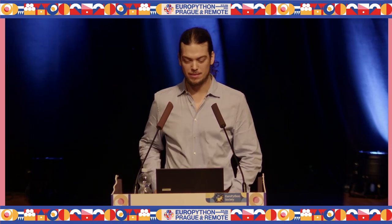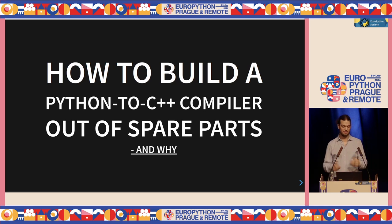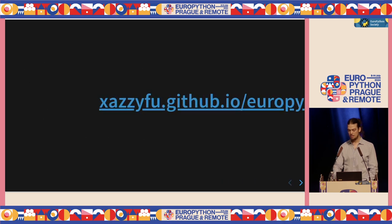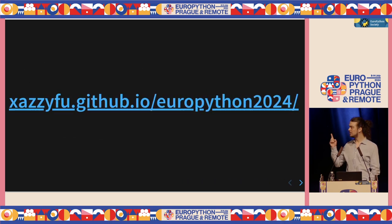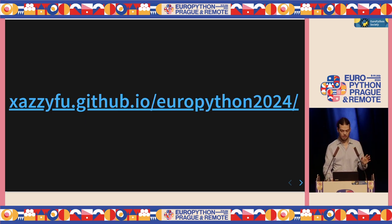Thank you for being here, and thank you to EuroPython for hosting this talk. I'm Xavier Thompson, and I present to you this talk: how to build a Python to C++ compiler out of spare parts. I put the slides over there if you want to see them live, otherwise I'll also send them to EuroPython afterwards. Let's get started.